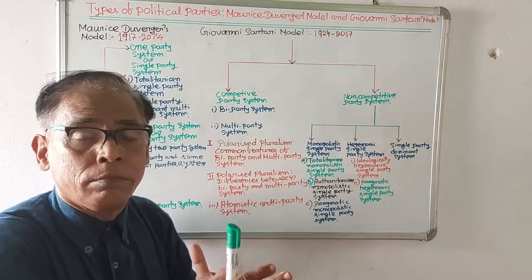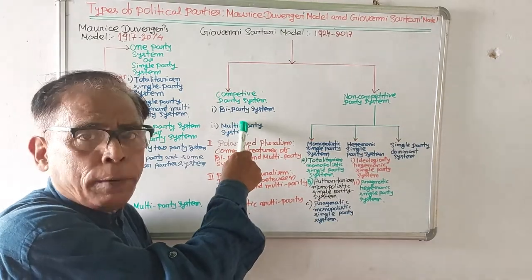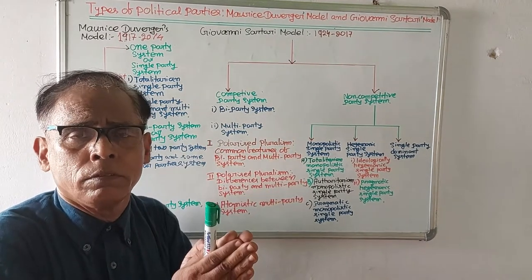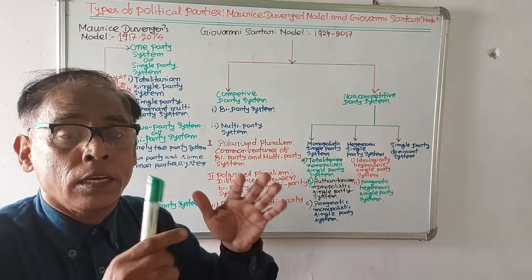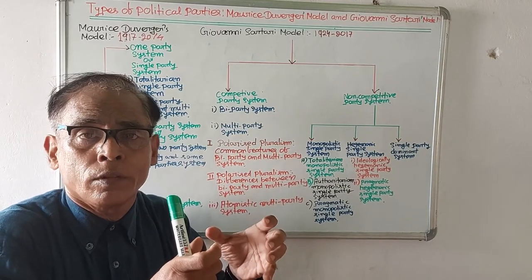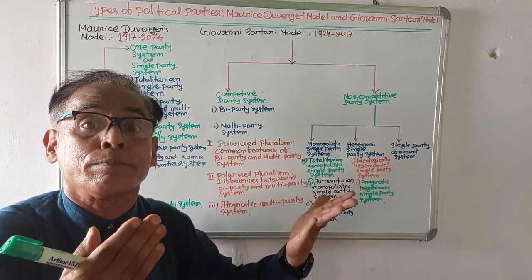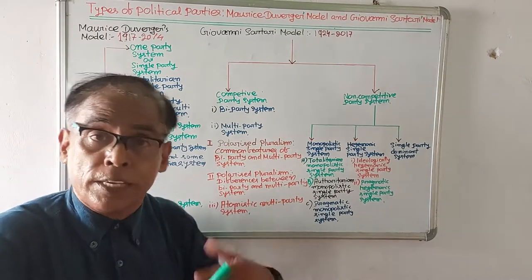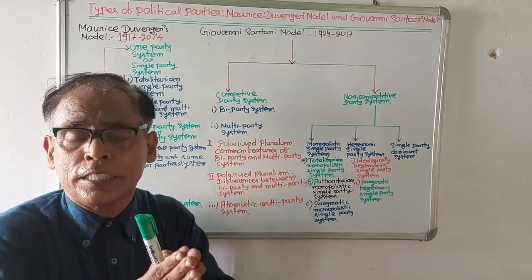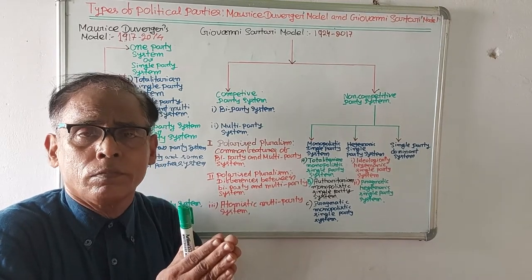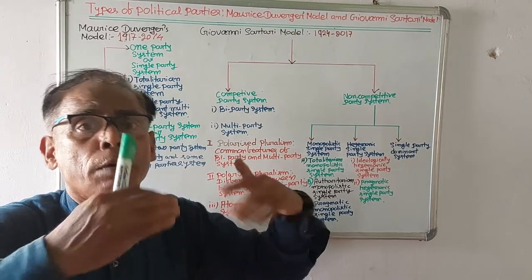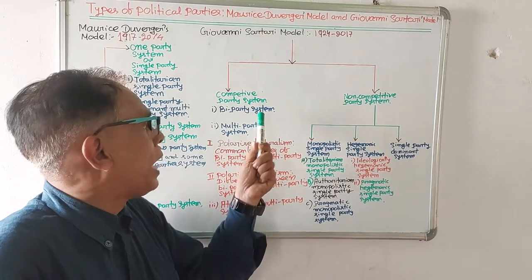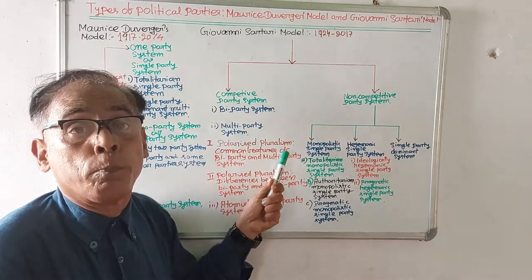In the competitive party system, he has placed two types: bi-party system and multi-party system. In both, there will be competition among parties to capture the power. He has described the multi-party system as polarized pluralism — meaning if there are many groups but each group is different from the other, it is polarized pluralism.